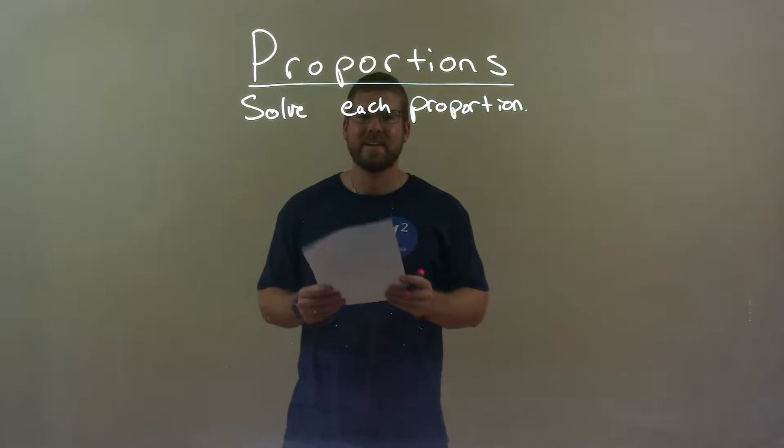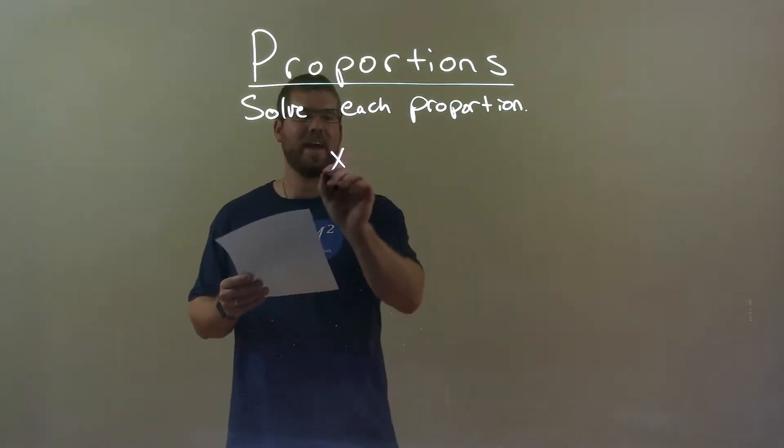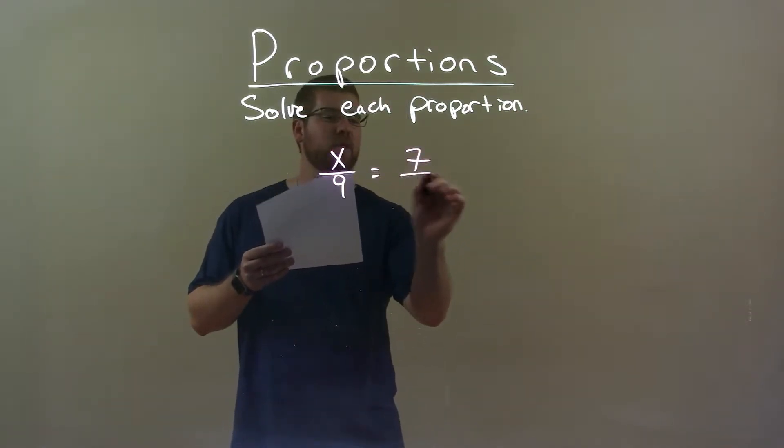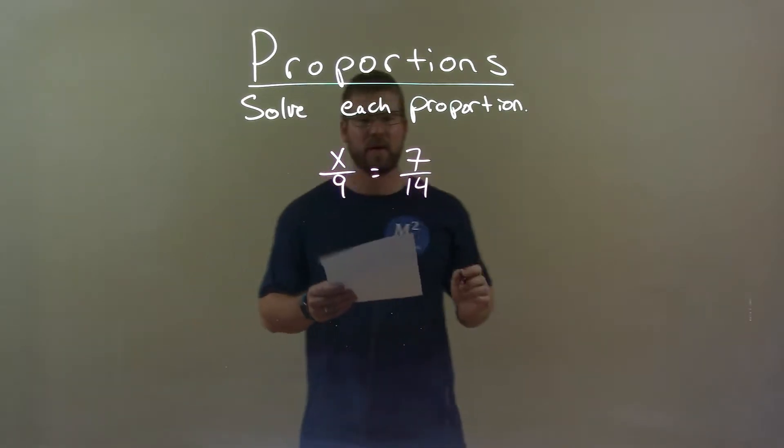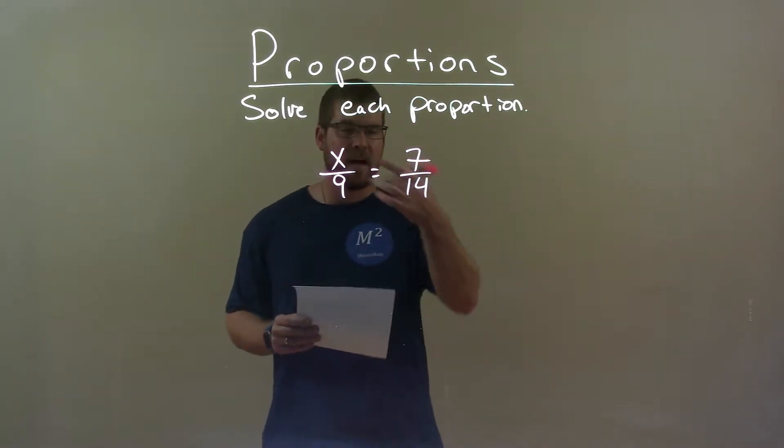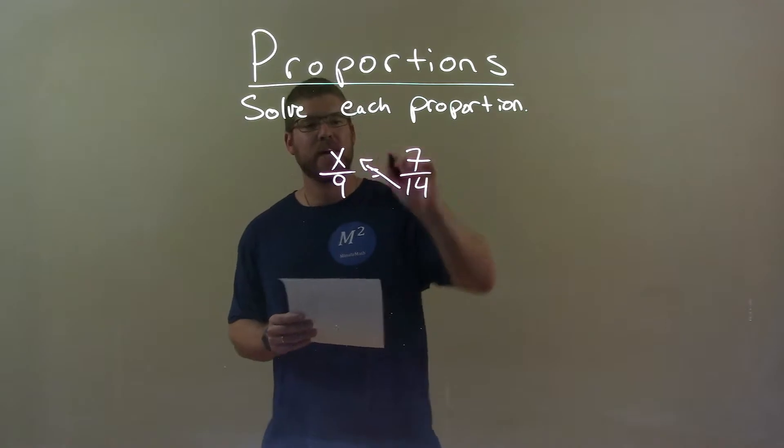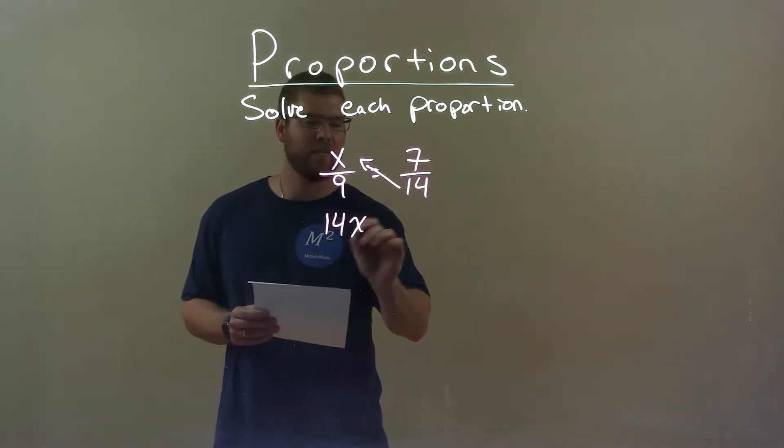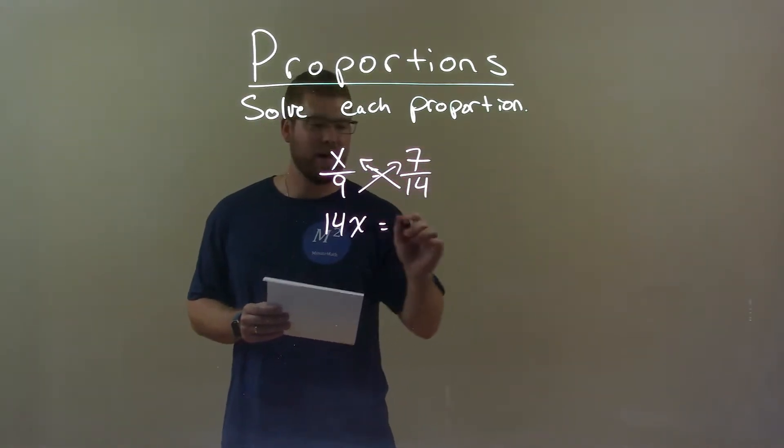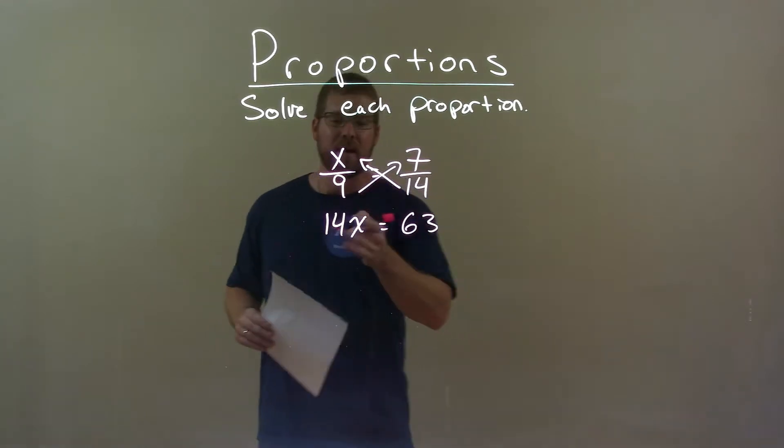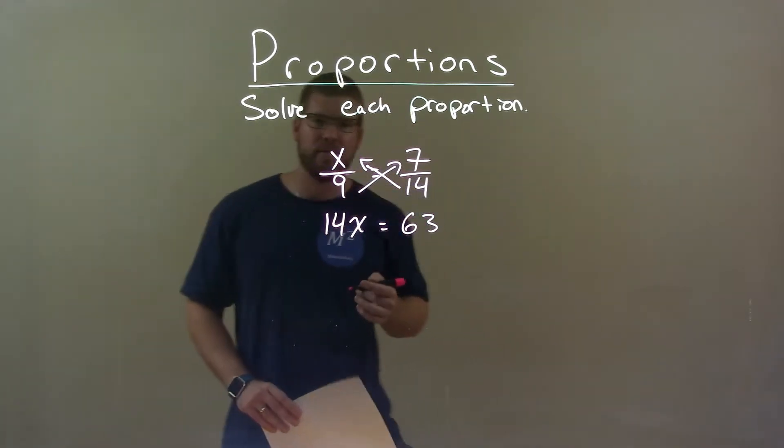If I was given this proportion, x over 9 equals 7 over 14, okay? What I want to do here is I want to cross-multiply. 14 times x is just 14x. 9 times 7 is 63. Now I have 14x equals 63.